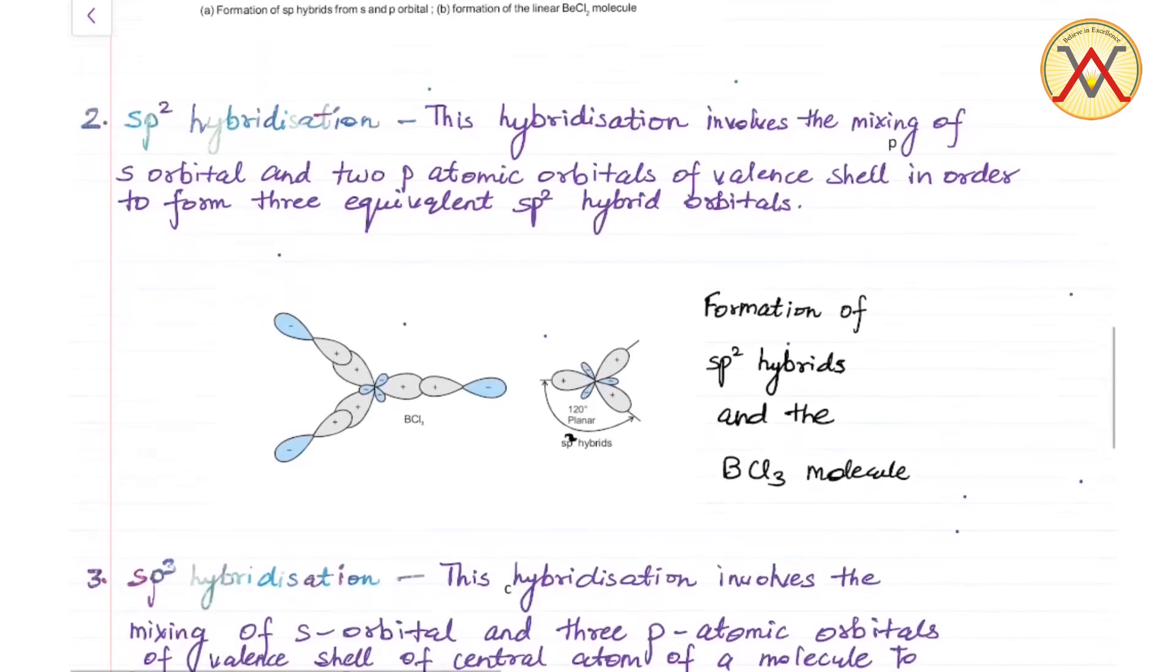Next is sp2 hybridization. This hybridization involves the mixing of s orbital and two p atomic orbitals of valence shell in order to form three equivalent sp2 hybrid orbitals.